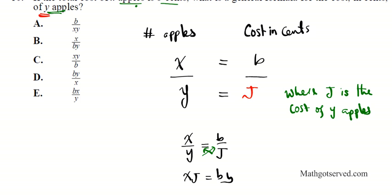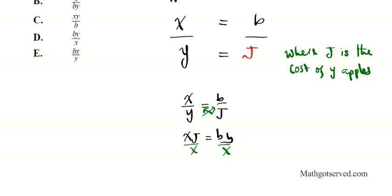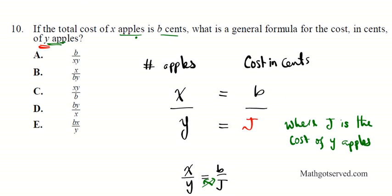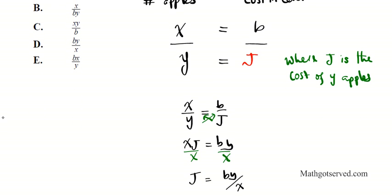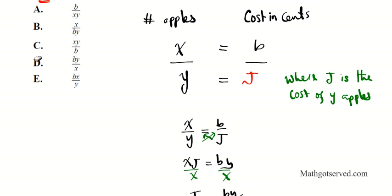Now to isolate j, divide both sides by x. So j, the cost in cents for y apples, equals by over x. So the answer is by over x, which is D.